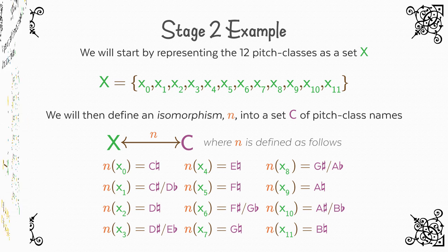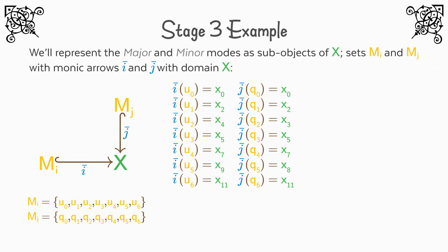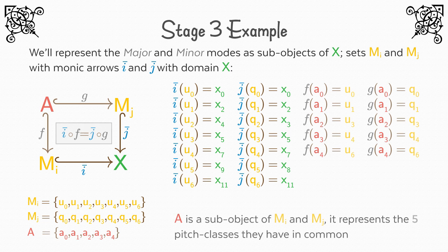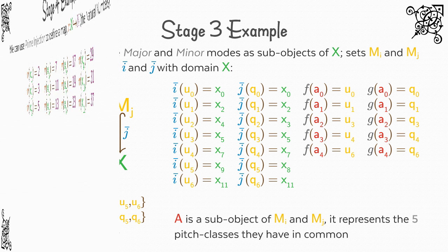In stage three, after we have explored all the possible ways we could represent certain concepts, we will form a list of the questions we would like to ask, and figure out how best to do this within the theory. For example, asking which pitch classes the major and minor mode have in common is best represented as a question about sub-objects. Given two sub-objects, MI, MJ of X, representing the major and minor mode respectively, can we find a third sub-object A of X that is also a sub-object of MI and MJ, and moreover that A is the largest set which has satisfied these conditions.